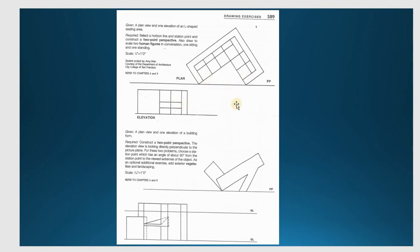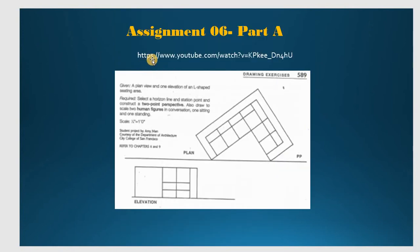Use this one for elevation when you draw the viewpoints. You stay right here and look both sides. You need to draw following the way we did before for two-point perspective. After that, use this one as a guideline for dimension and elevation height. This is Part A. If you want to look at this, you can go to the web link I provided. They have instructions for Part A and one short video for instruction.